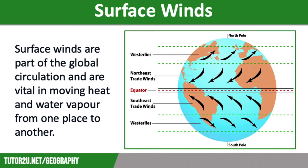These winds curve as they blow across the surface because they are distorted by the rotation of the earth. Trade winds in the tropics blow tropical storms from east to west.